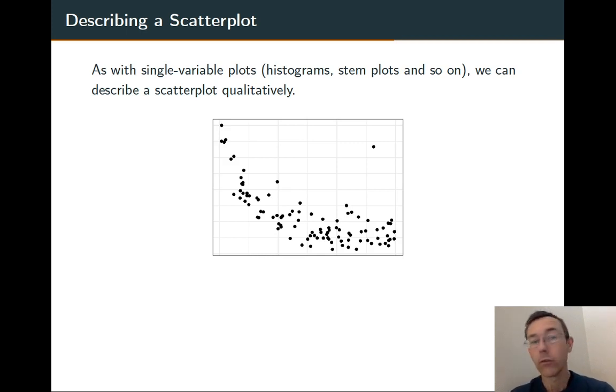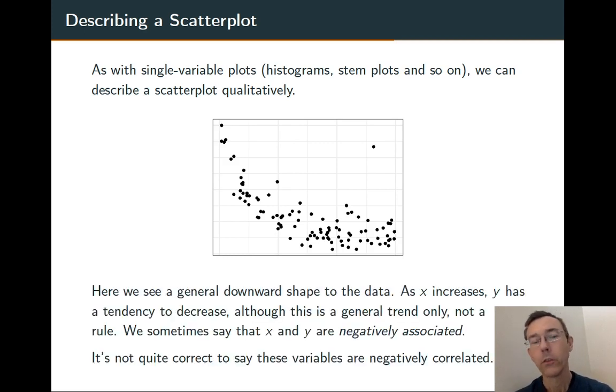It's good to be able to describe scatter plots qualitatively. So for example, here we see a general downward shape to the data. Certainly, that's not true deterministically. As you read from left to right, there's plenty of points where you go upward as you go from left to right. But generally, the shape of the data is downward sloping.